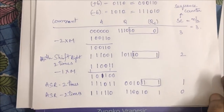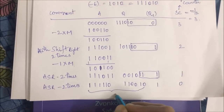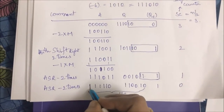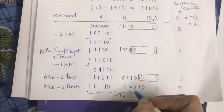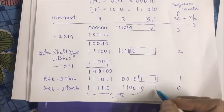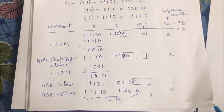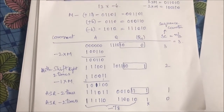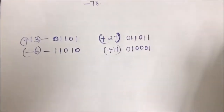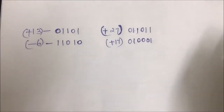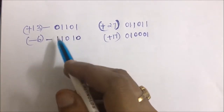When the sequence counter reaches 0, stop the process. If you verify the answer, it equals -78. The leading 1 indicates it is a negative value. Take the 2's complement of the complete value to confirm you get -78. One bit should be ignored. This is the answer for 13 × (-6). An important point: the number of bits in the multiplicand and multiplier must always be an even number.